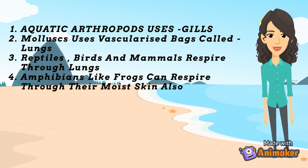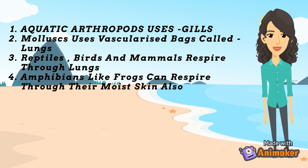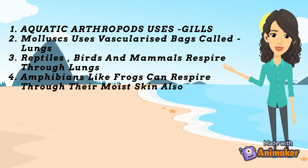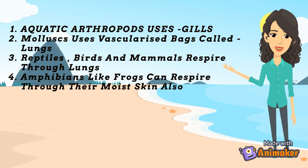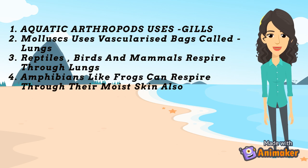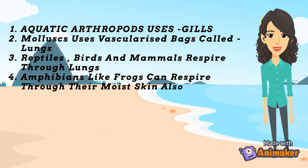Earthworms use their moist cuticle, and insects have a network of tubules to transport atmospheric air within the body. Special vascularized structures called gills are used by most aquatic arthropods and mollusks, whereas vascularized bags called lungs are used by terrestrial forms for the exchange of gases among vertebrates.